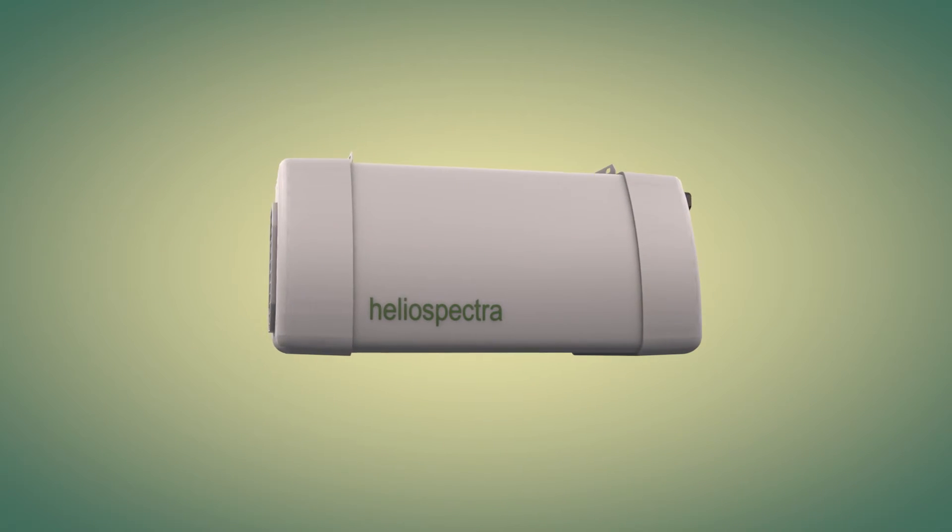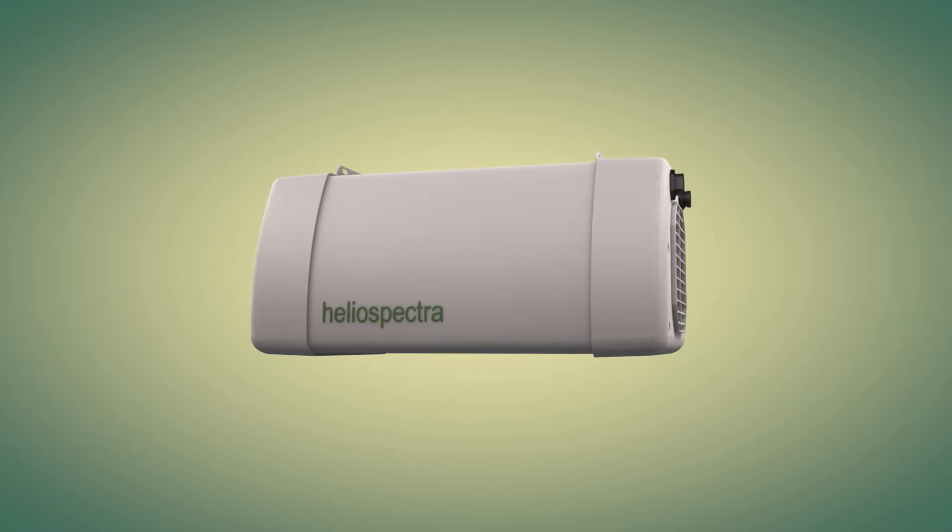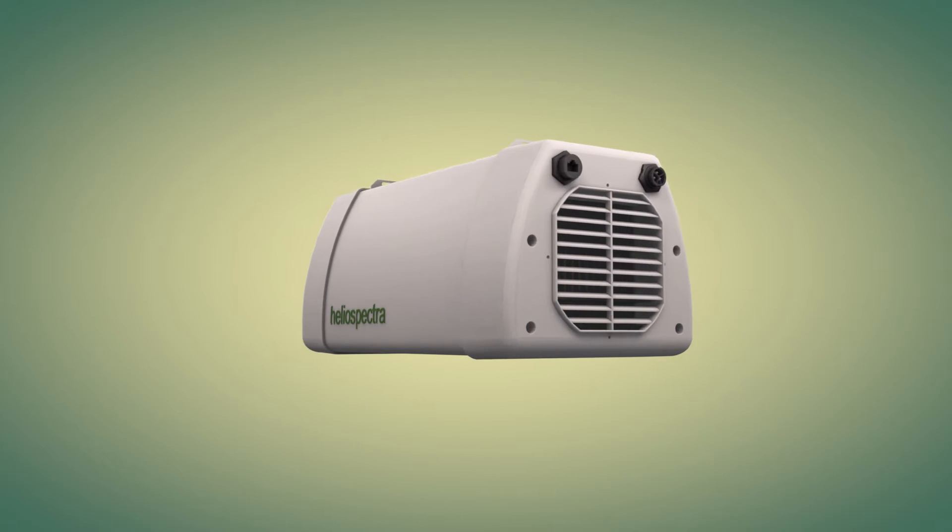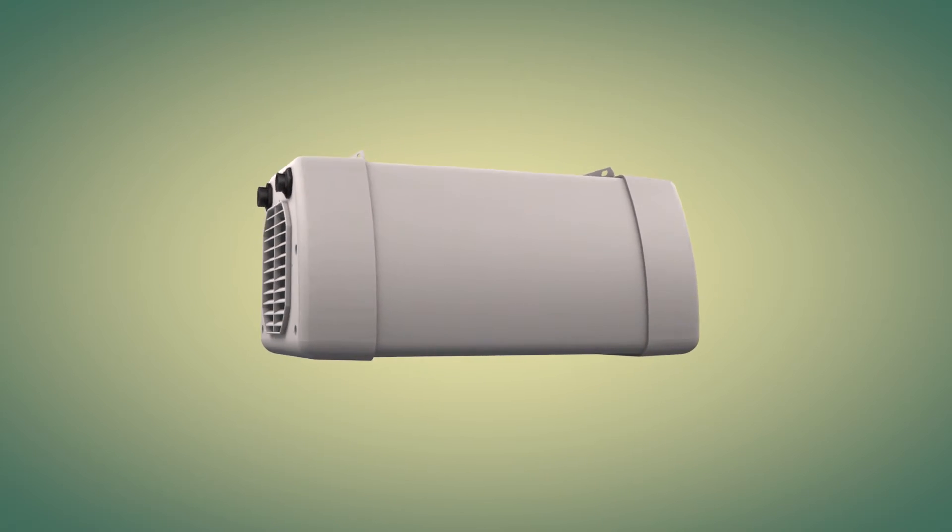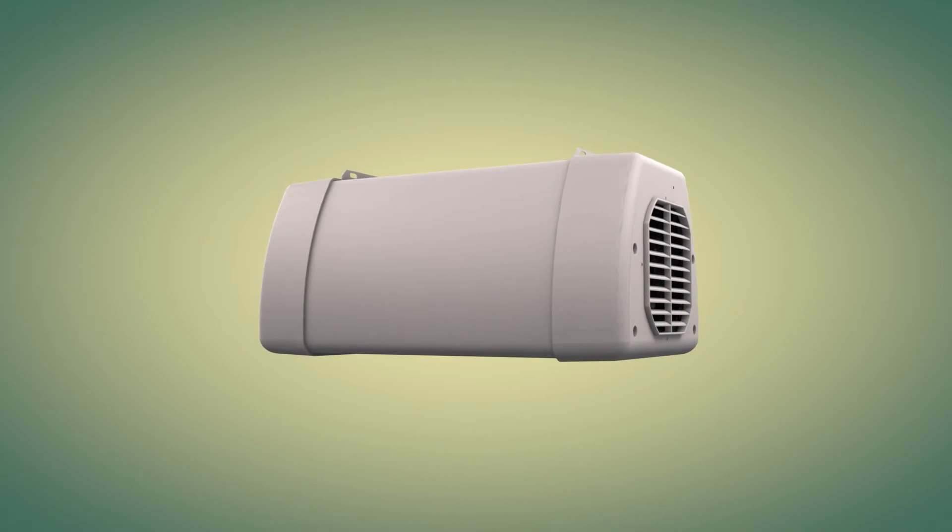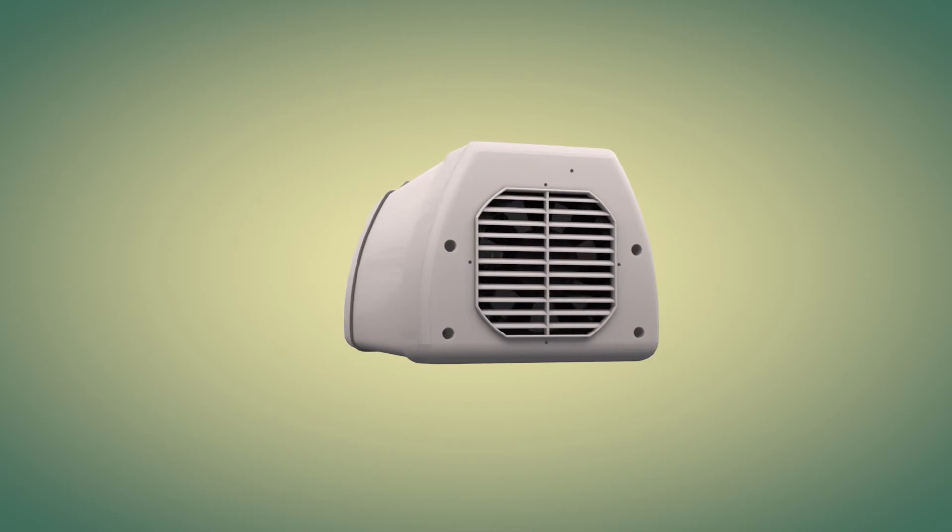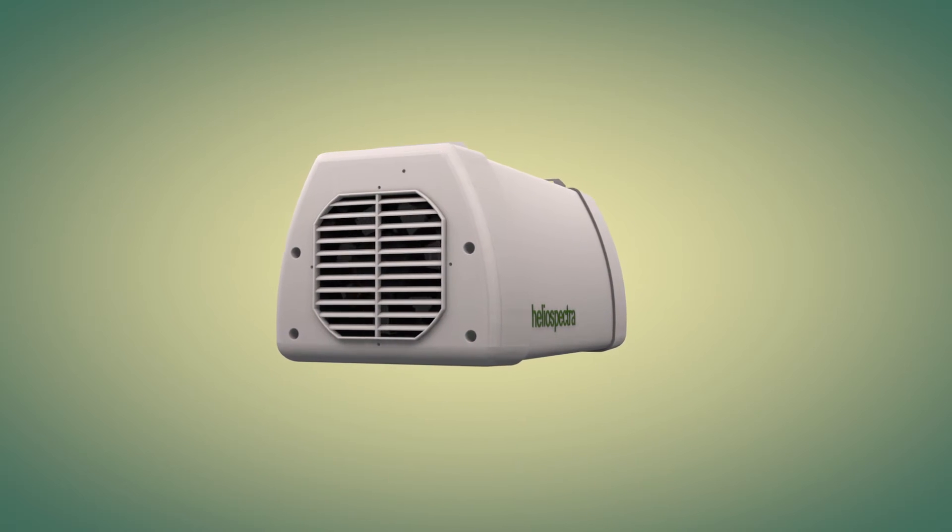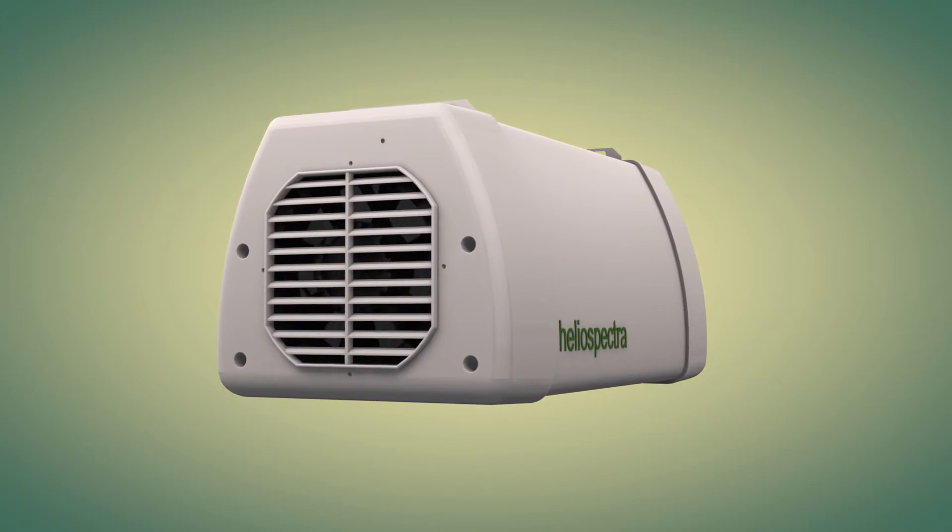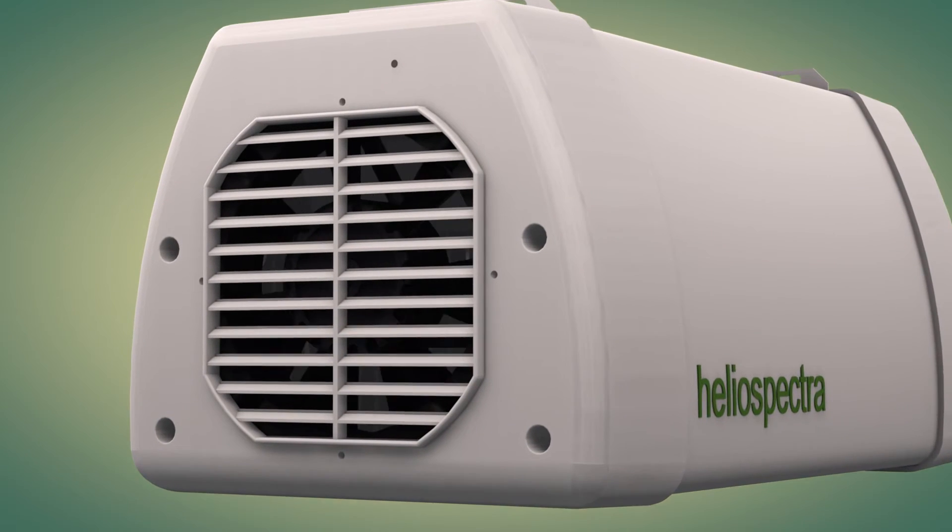Our light systems are constructed to protect against heat, humidity, dust and other adverse conditions. From the housing made of zinc treated powder coated sheet metal and durable ABS plastic to the IP54 rated electronics, you can feel safe knowing that Heliospectra lights will stand up to dynamic growth environments.